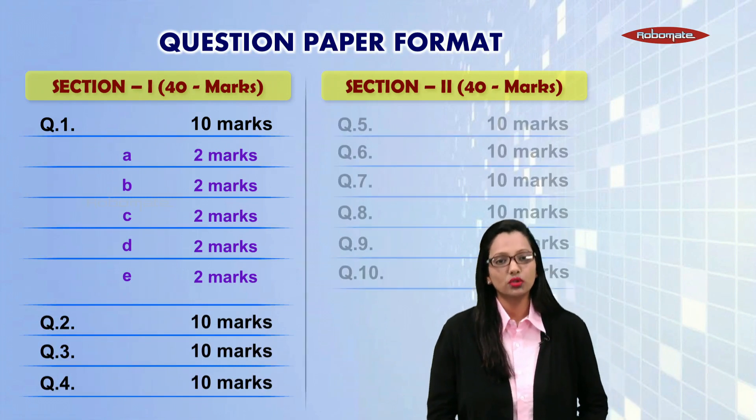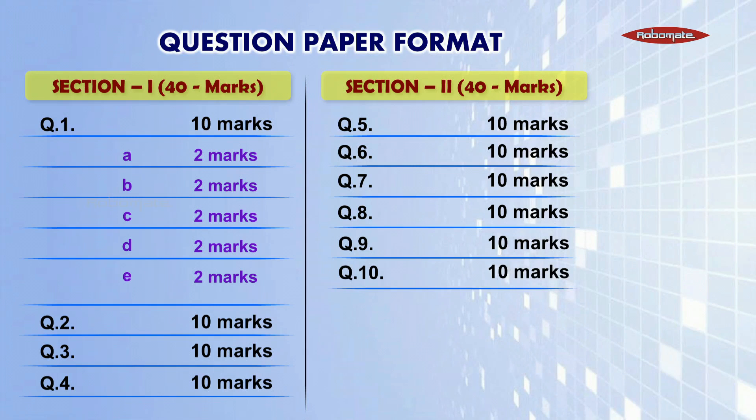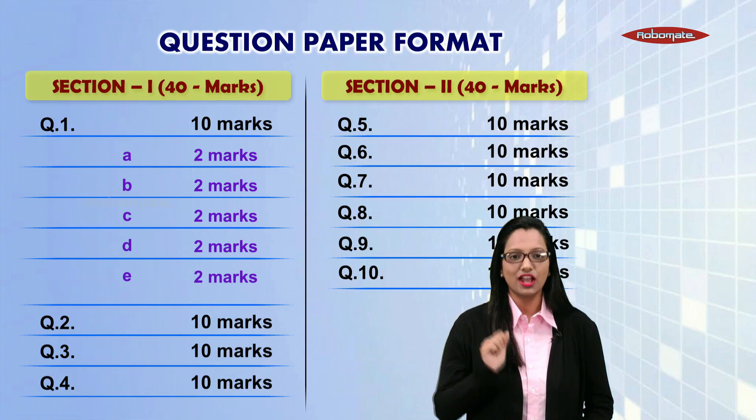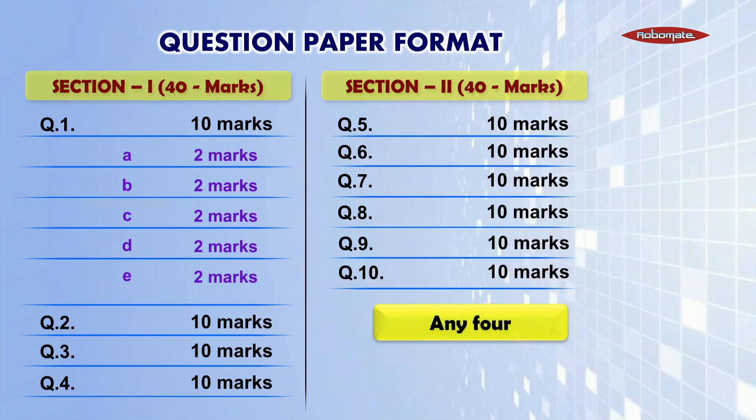Now jumping to Section 2, here you have 6 questions, right from question number 5 to question number 10. As you can see, even though the section is 40 marks and has 6 questions, out of 6 you are supposed to solve any 4. Guys, you have an option of 2 questions.